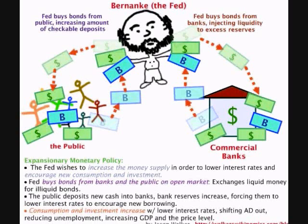If the Fed wants to raise interest rates, it sells government securities to the open market. When the Fed collects the money for these securities, it decreases bank reserves. This leaves the banks less money to lend out, which tightens up credit. Because there is now less money to lend out, banks will raise their lending rates to lower demand.